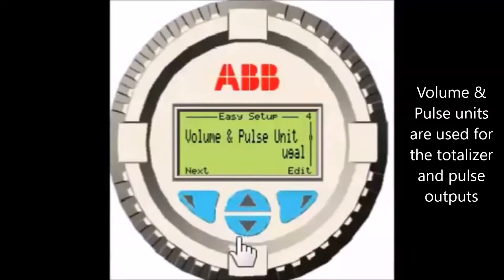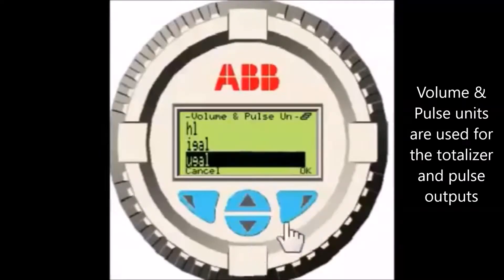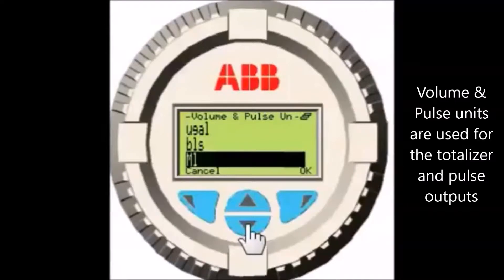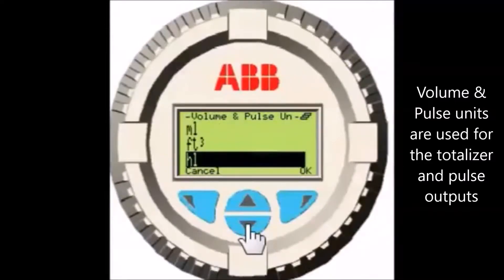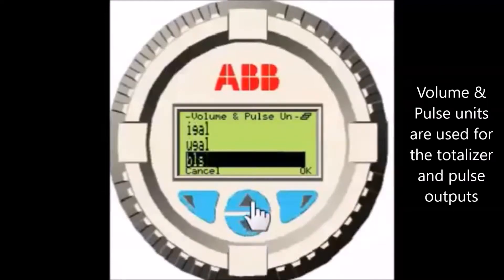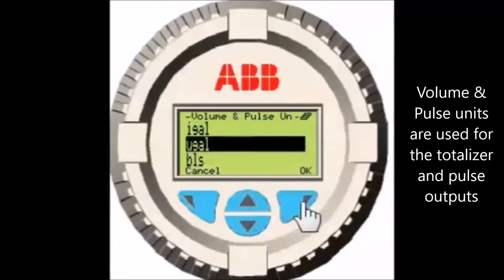Select Next to advance to volume and pulse unit. This sets the units used for totalization and pulse output. Select Edit and use the up and down arrow soft keys to select your units. Select OK to accept the selection, then select Next to advance.